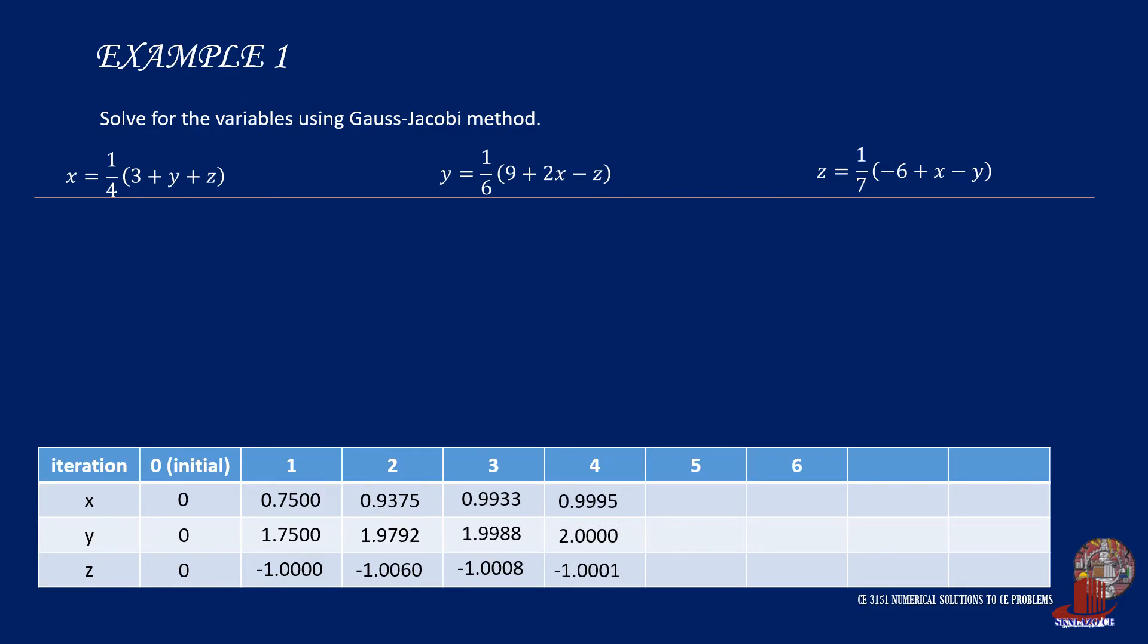We proceed to another couple of iterations. x sub 5 is one-fourth of 3 plus 2 minus 1.0001, and that is 1. y sub 5 is one over 6 of 9 plus twice of 1 minus negative 1.0001 to have 2. And z sub 5 is one over 7 of negative 6 plus 1 minus 2, and that is negative 1.